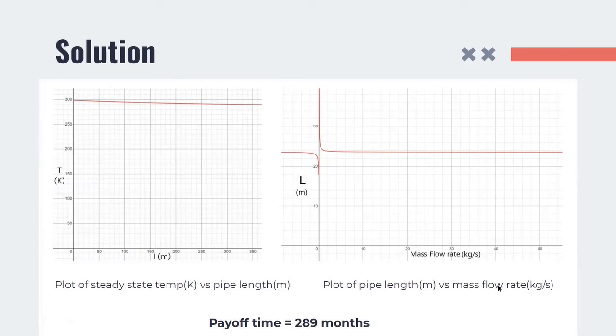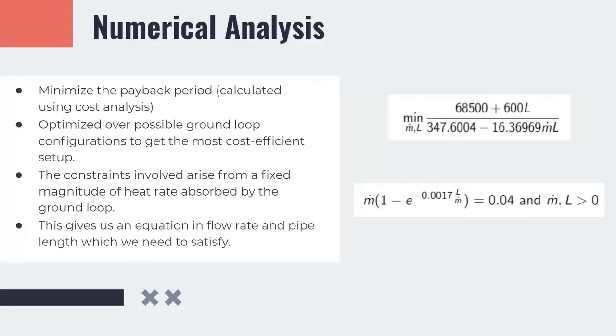Using these for the constraint optimization, we get that the payoff time is 289 months. The numerical analysis is done as follows. We use the cost analysis to get a rough expression for the payback period in months, which is then optimized over possible ground loop configurations to get the most cost efficient setup. The constraints involved arise from a fixed magnitude of heat rate absorbed by the ground loop. This gives us an equation in flow rate and pipe length, which we need to satisfy.